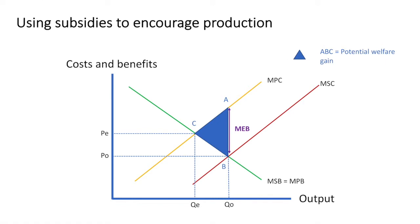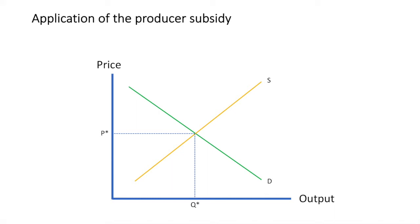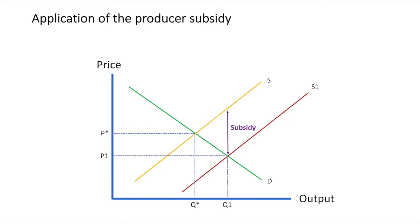How will the production subsidy help address this market failure? The initial equilibrium for this market is P star Q star. A subsidy equal to the marginal external benefit is given to producers, resulting in an increase in supply. The price paid by consumers is now P1 at a quantity of Q1. Going back to the example of the airport: if the airport was paid for entirely by private firms, they would charge higher fees for access to it. By subsidising the construction of the new terminal, the government is able to reduce some of these costs so that more passengers can enjoy affordable access.